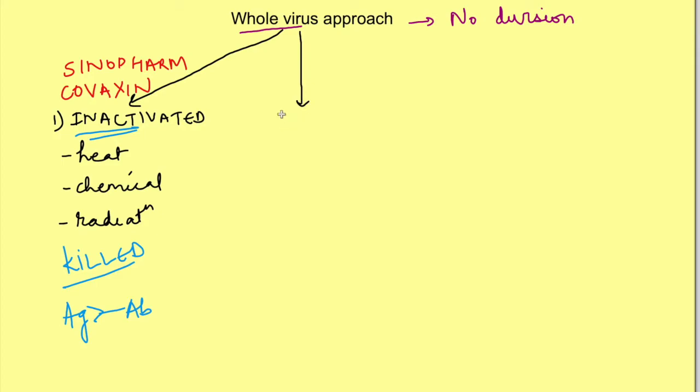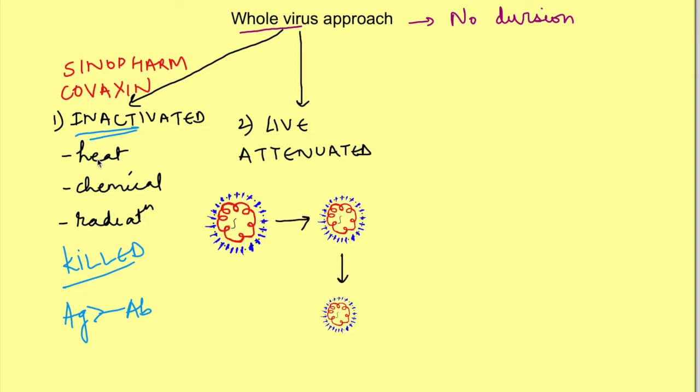Another approach for using whole virus is use of live attenuated vaccine. In this the pathogen is made very weak by growing it repeatedly over cell cultures. This kind of live attenuated virus vaccine produces an infection which generates an immune response and the virus is also able to replicate a bit but because it is a weak virus it is not able to cause a disease even though we are infected.